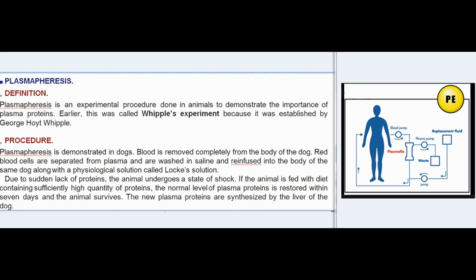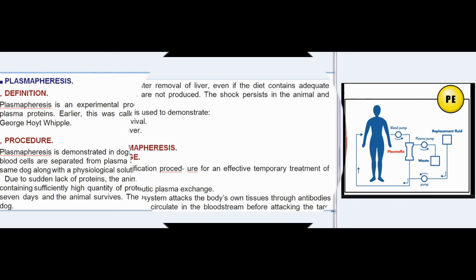Due to sudden lack of proteins, the animal undergoes a state of shock. If the animal is fed a diet containing a sufficiently high quantity of proteins, the normal level of plasma proteins is restored within seven days and the animal survives. The new plasma proteins are synthesized by the liver of the dog.